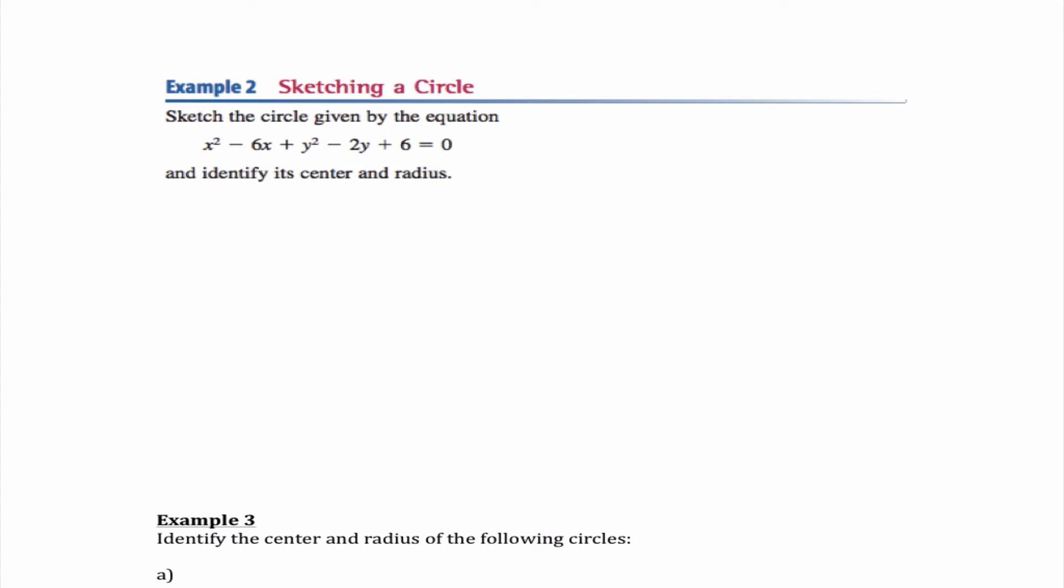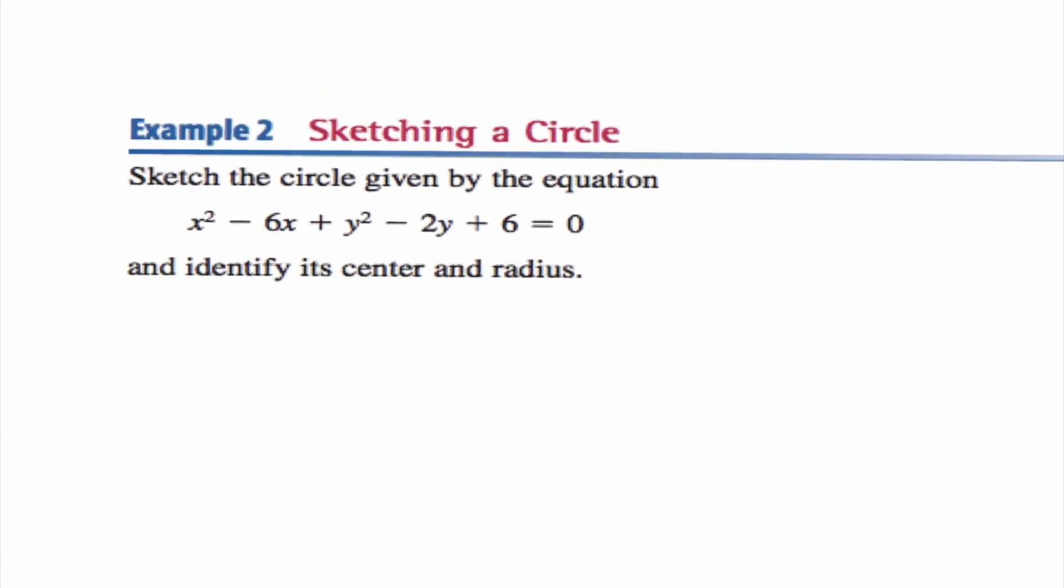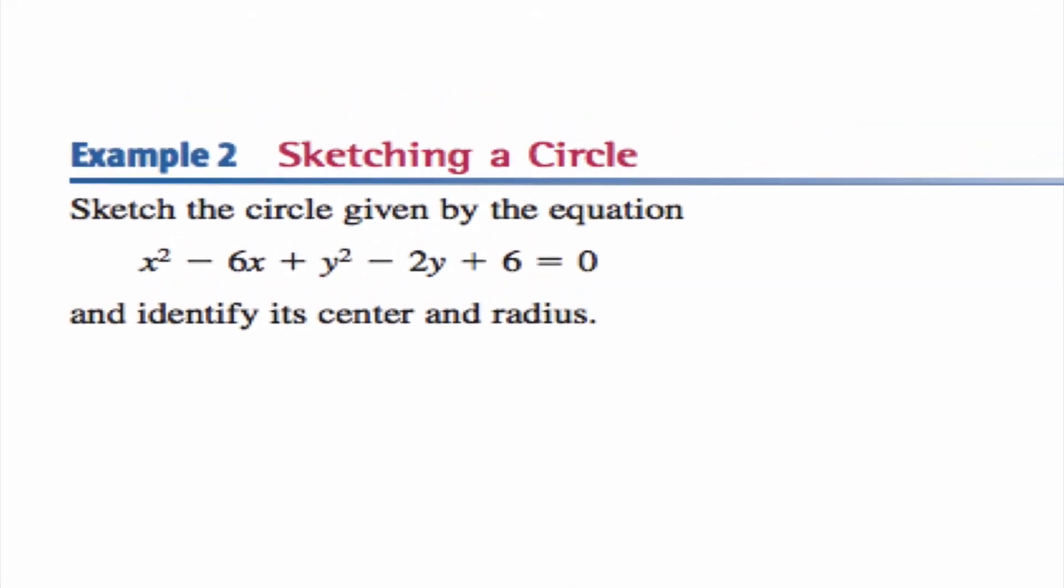Number 2 tells us to sketch a circle. We're given the equation and we need to identify its center and its radius. So first of all, looking at this, I know it's a circle because both x and y are squared, they are added together, and they have the same coefficient. Now what stands out to me is that this is not in the correct form. In fact, looking at this, I notice we have an extra x and I have an extra y. When we have an extra x and y, that reminds me that we need to complete the square.